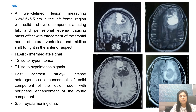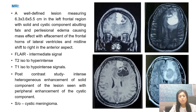On MRI, a well-defined lesion measuring 6.3 x 3.6 x 5.5 cm was found in the left frontal region with solid-cystic component abutting the parts, perilesional edema causing mass effect with effacement of frontal horns of the lateral ventricles, and midline shift to the right in the anterior aspect. FLAIR showed intermediate signal. T2 showed iso- to hyper-intense signals and T1 had iso- to hyper-intense signals. Post-contrast study showed intense heterogeneous enhancement of the solid component with peripheral enhancement of the cystic component. The imaging diagnosis was suggestive of cystic meningioma.